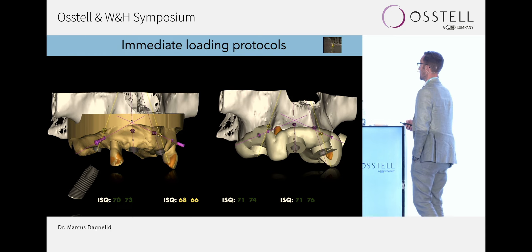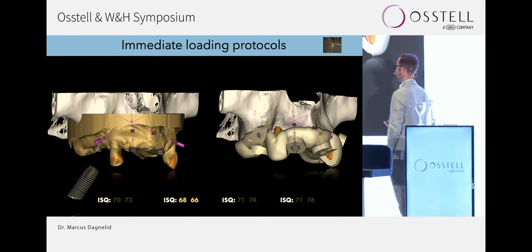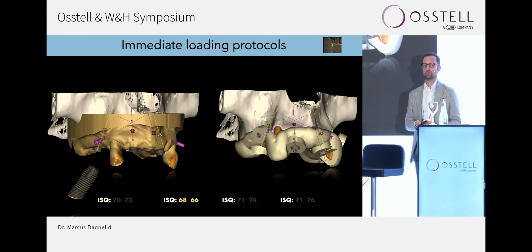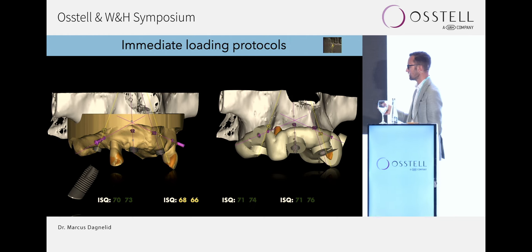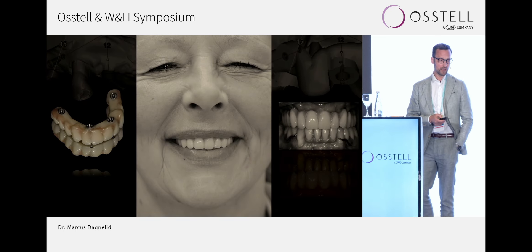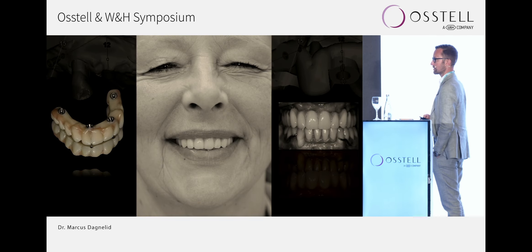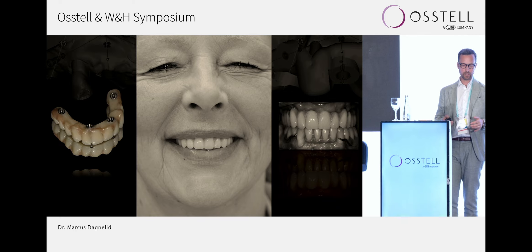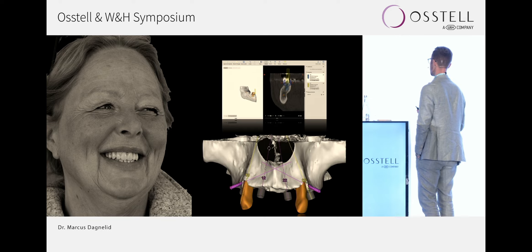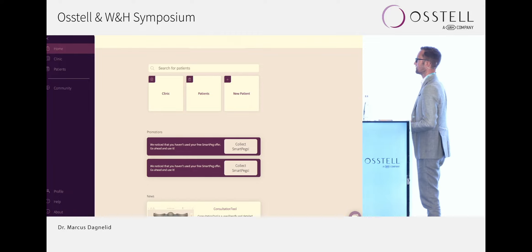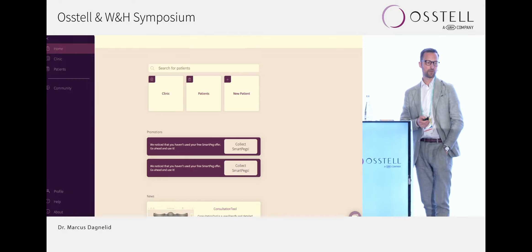I would prefer to have at least ISQ in the 70s if I'm loading immediately, at least in the most distal areas. Some studies indicate you need at least above 65. If I have one implant in the middle with a lower value, I feel fine because I can splint the implants together in a rigid reconstruction. We prefer to use fiber-reinforced frameworks — we take impressions, reinforce them with fiber so it's really strong, and link them cross-arch. This makes it predictable and allows us to utilize this in more patients. And of course, we collect the data and bring it up to the cloud — to our Austell Connect platform.